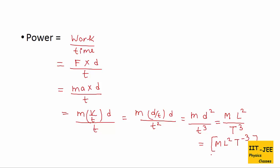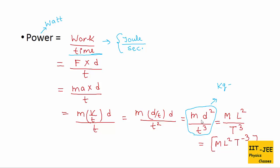The SI unit of power is Watt. From the formula, the unit of work is Joule and time is second, giving Joule per second as another unit of power. From the dimensional formula, for mass it is kg, for distance it is meter squared, and for time it is second cubed, giving kg m²/s³. So Watt is equivalent to Joule per second and also to kilogram meter squared per second cubed.